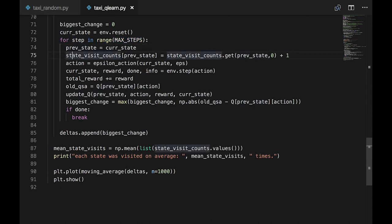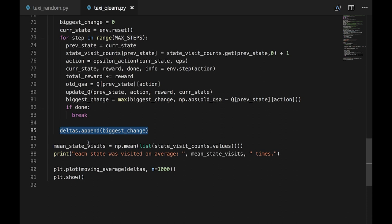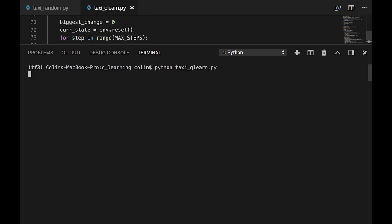Alright, now for each step of each game. First, we store the previous state. We add a visit to our state visit counts. We pick an action using the same epsilon greedy algorithm from Monte Carlo. Then, we feed the chosen action to the environment and get back state prime, the reward, and whether the game is over. We update the total reward calculation. Next, we update our Q table using the function we previously went over. We track the biggest change and store it in the deltas once per episode.